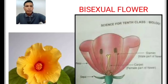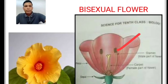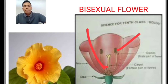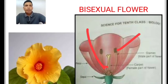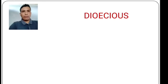Look here — this is a bisexual flower. This is the male reproductive structure, called stamen or androecium. This is the female reproductive structure, called pistil or gynoecium.